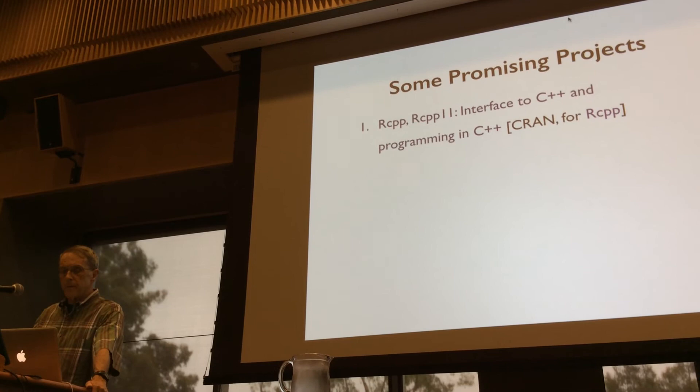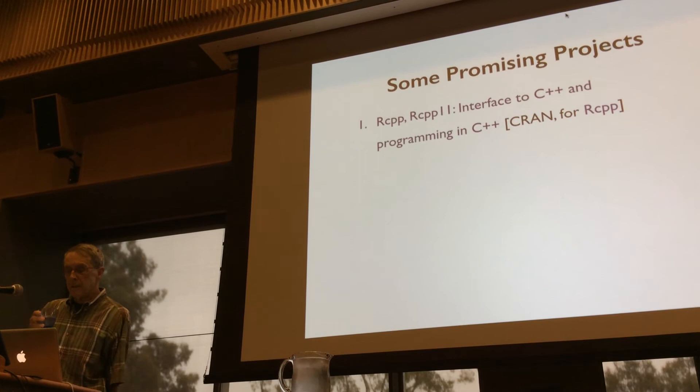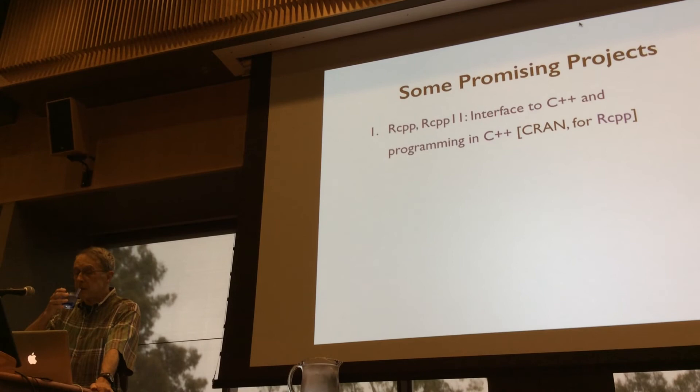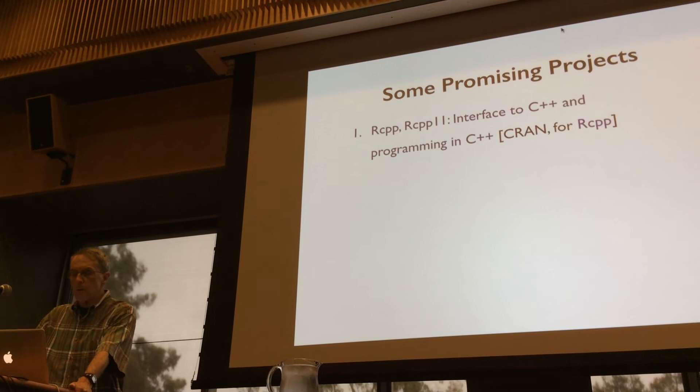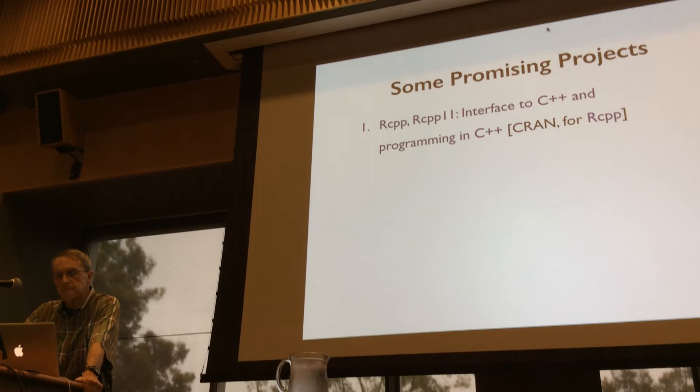Some of the examples are actually quite interestingly similar to what we did with the interface language. So in some sense I think of Rcpp as providing a modern and much more elegant version of our old fashioned interface language. Rcpp and Rcpp11 are both on CRAN. For Rcpp11 you also need to get another library from GitHub, but it's all out there. Rcpp has been around for quite a while and is really extensively used already — there are many, many packages that use it on CRAN.